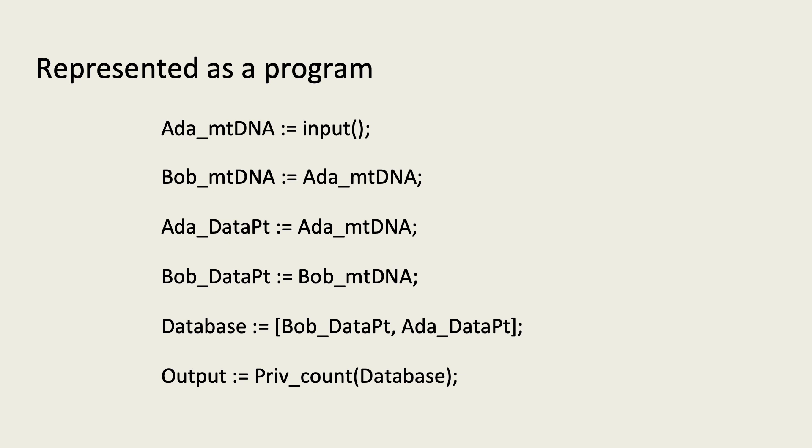We can view conditioning on Ada's data point as getting to see the value of this variable. Seeing the value of this variable will tell you the value of other variables, such as Bob's DNA or the database. Conditioning upon the value of Ada's actual DNA will tell you the exact same thing since the data point's value is equal to the DNA's.